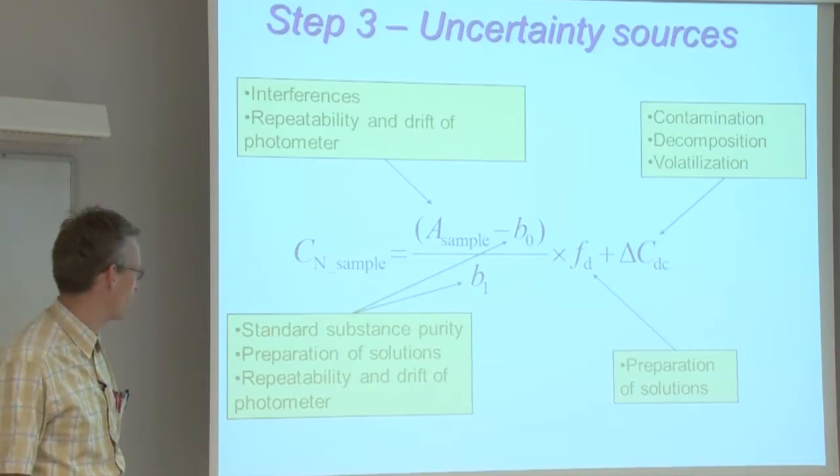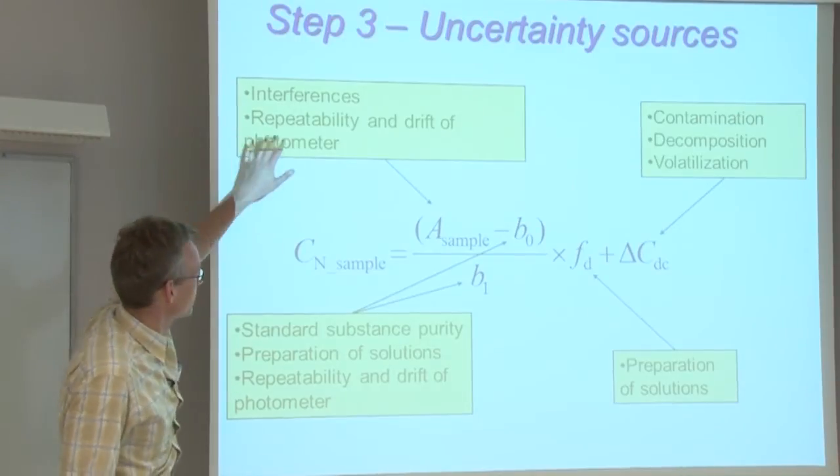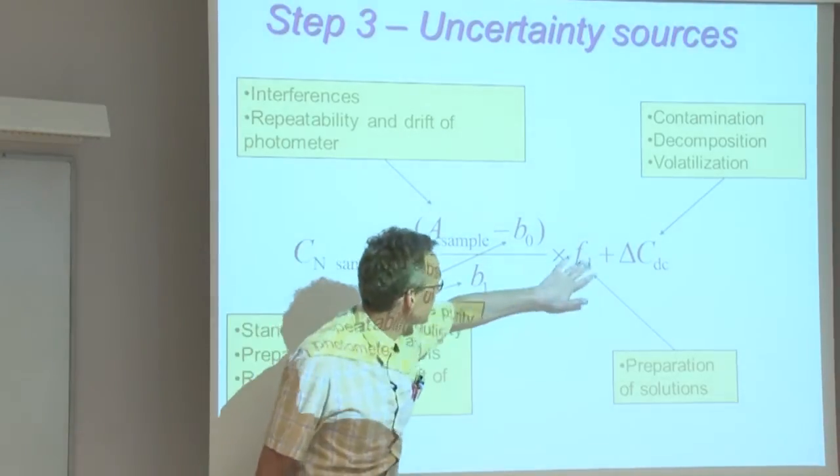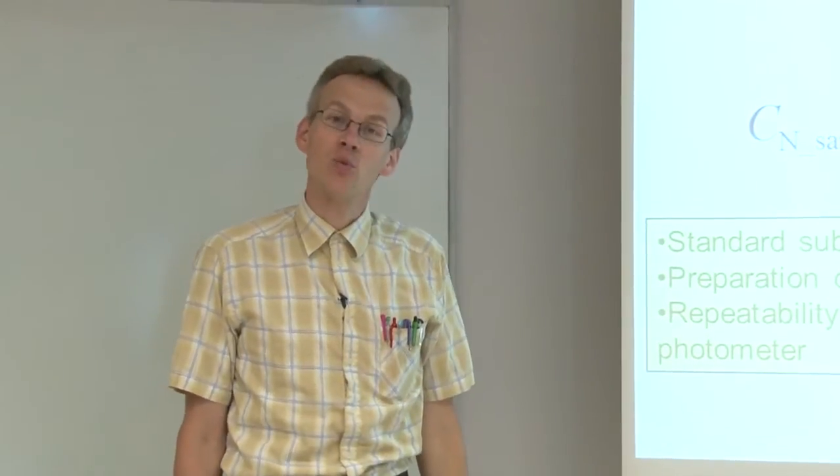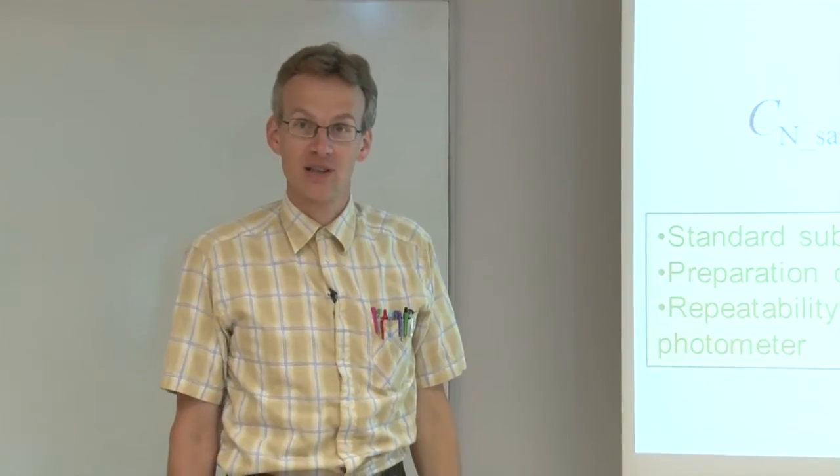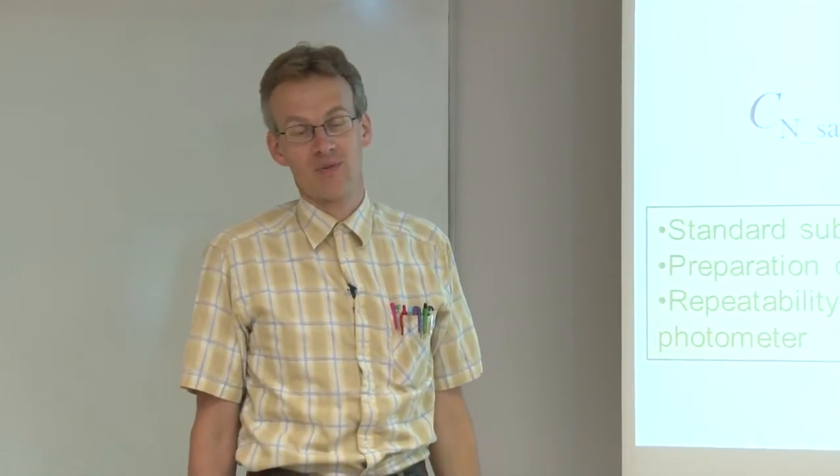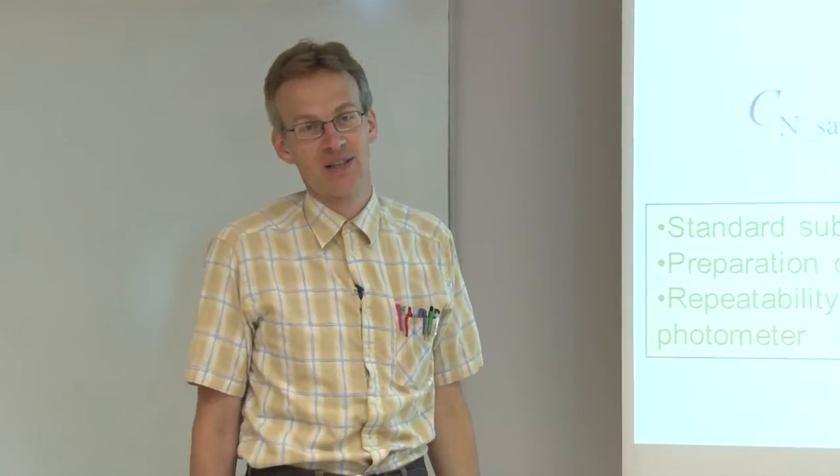We can look now how these uncertainty sources are accommodated by our model. This can be seen here. So all these uncertainty sources are somehow linked to different input quantities in the model, so that in our case we can consider that our model is good and is suitable for this analysis that we intend to carry.